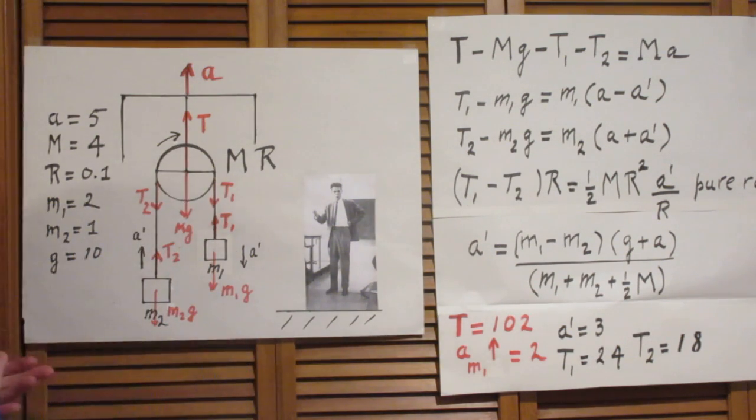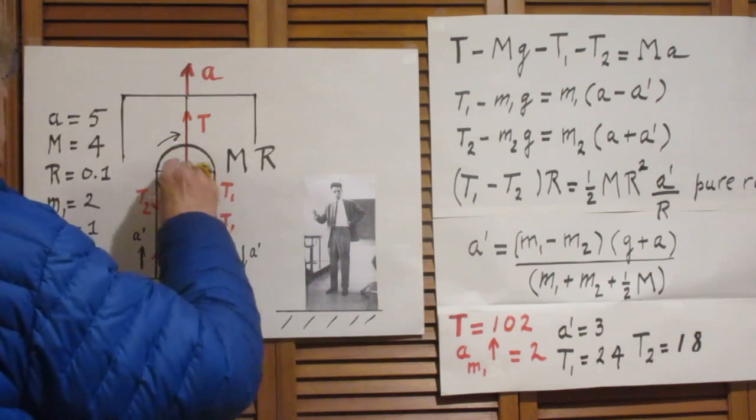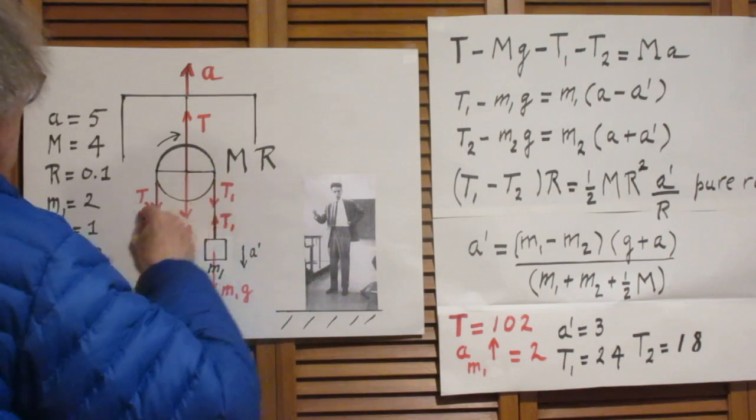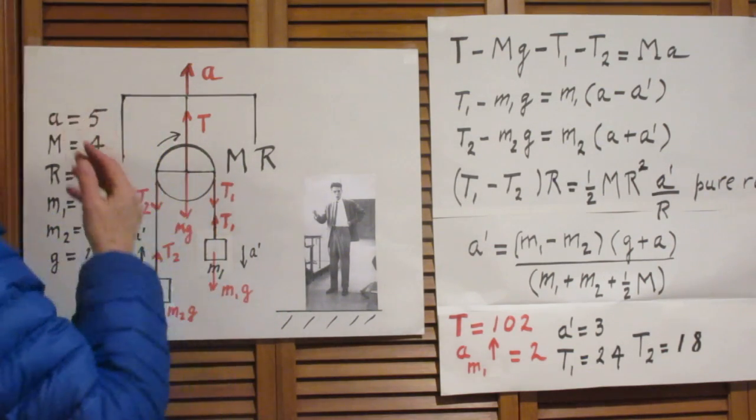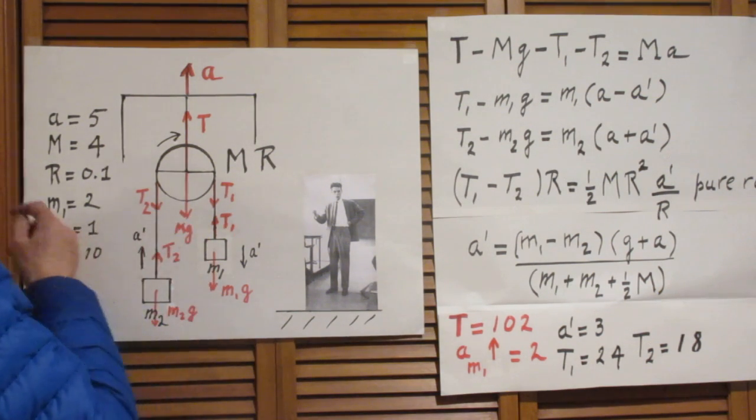Now before we compose the equations of motion, let's step inside the elevator. So you and I are now inside the elevator. We know that this pulley is going to rotate clockwise. The reason why we know that is that m2g is smaller than m1g.